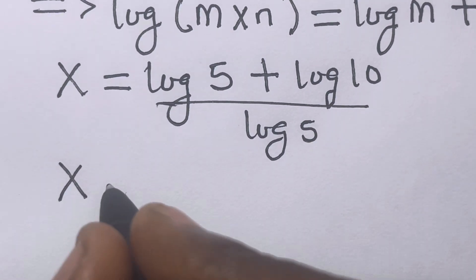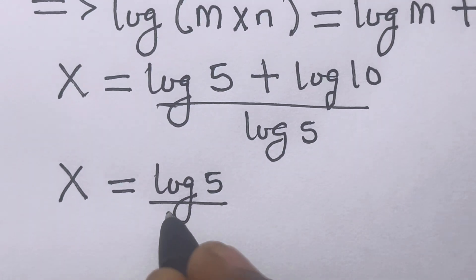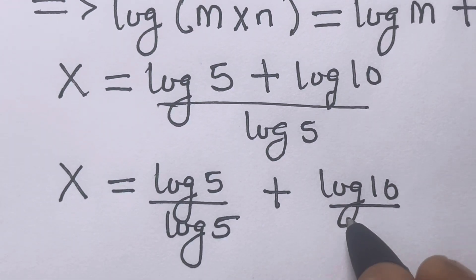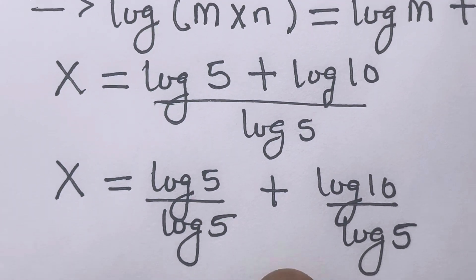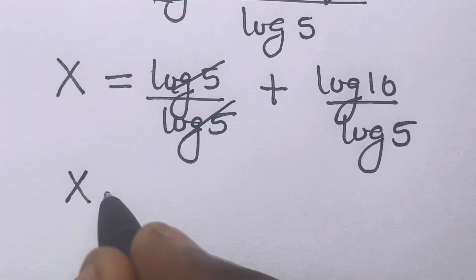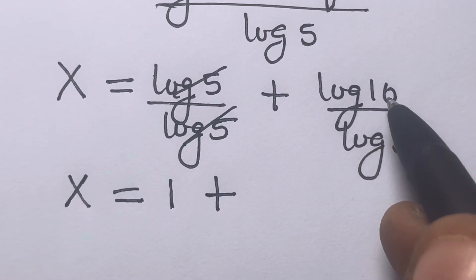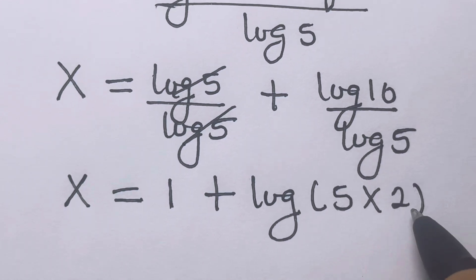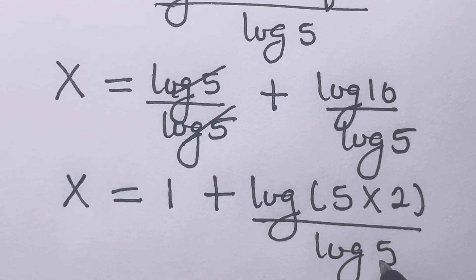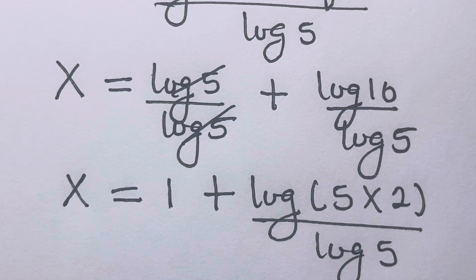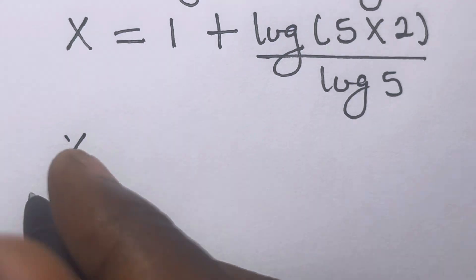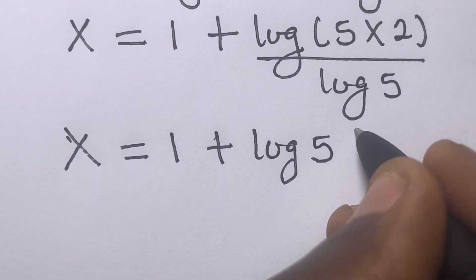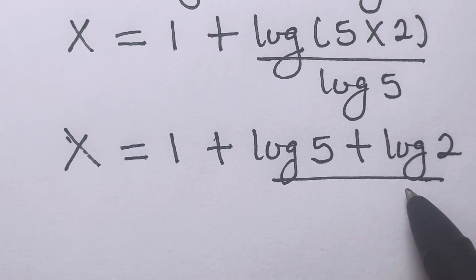So we will have x equals log 5 divided by log 5, plus log 10 divided by log 5. This implies that log 5 over log 5 cancels to become 1. Then we can express 10 as the product of 5 and 2, so that we have log(5 times 2) divided by log 5.